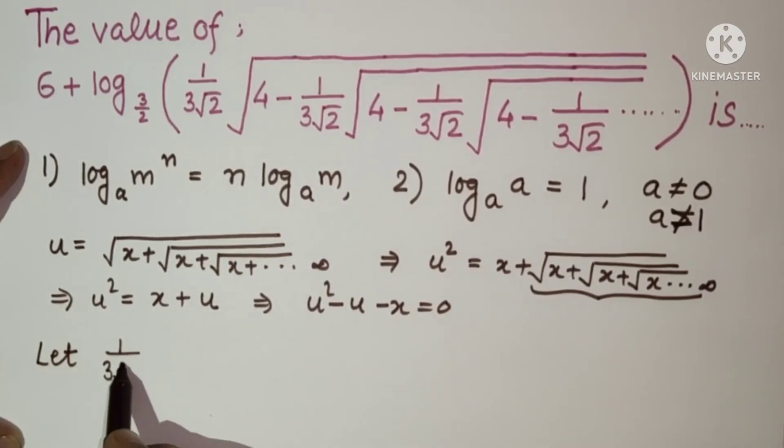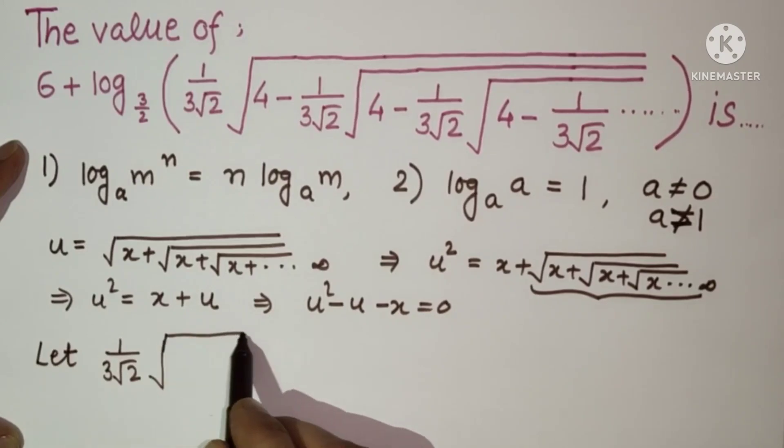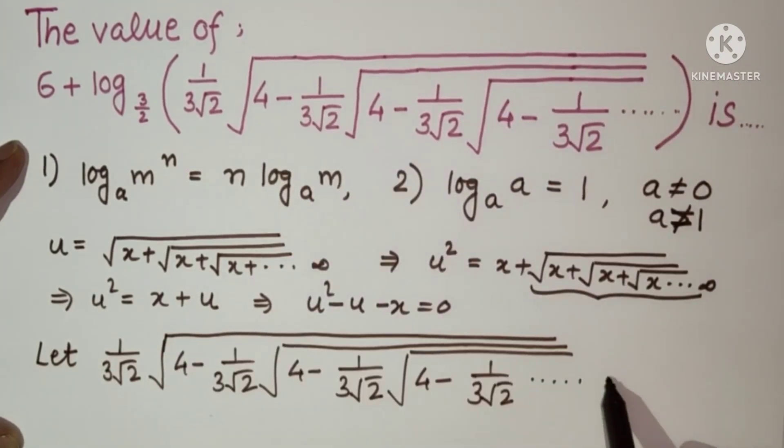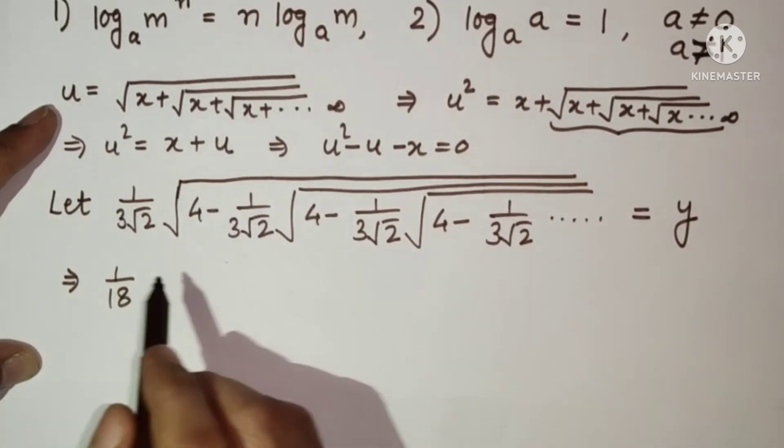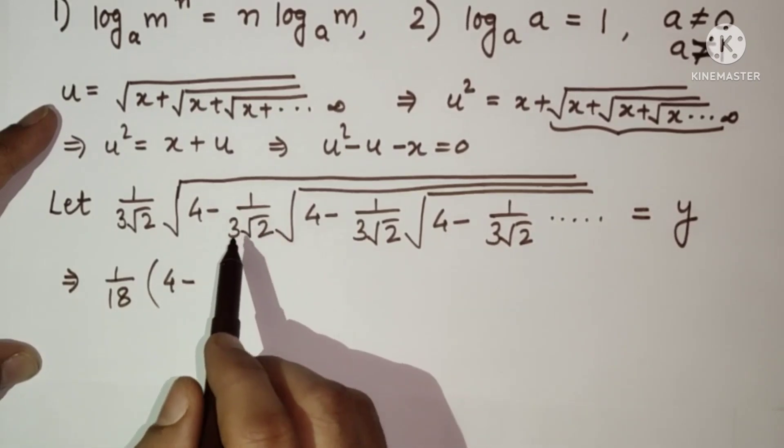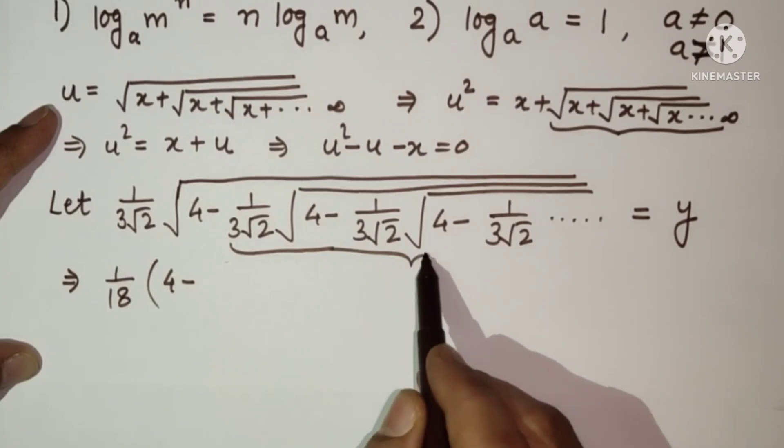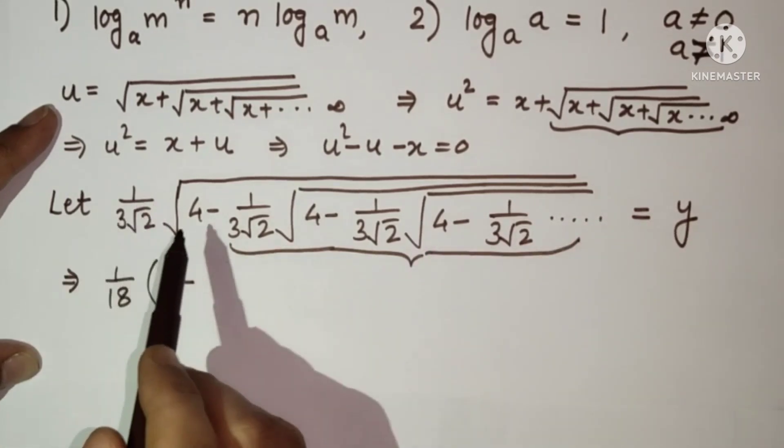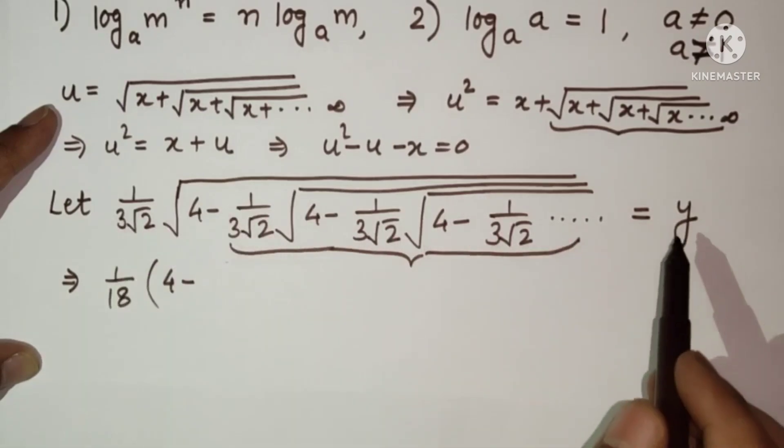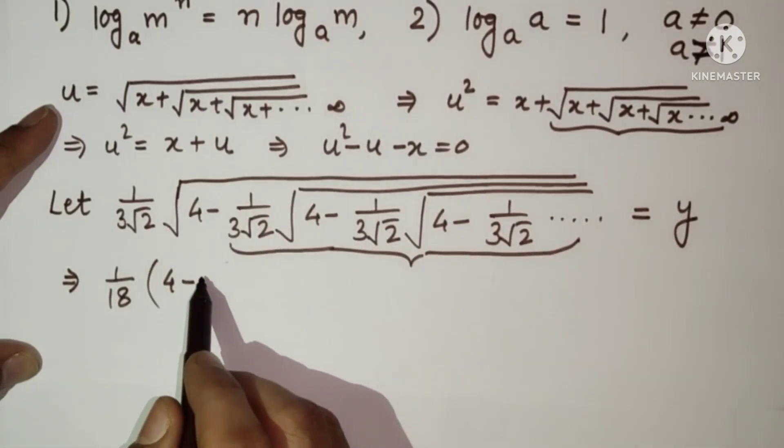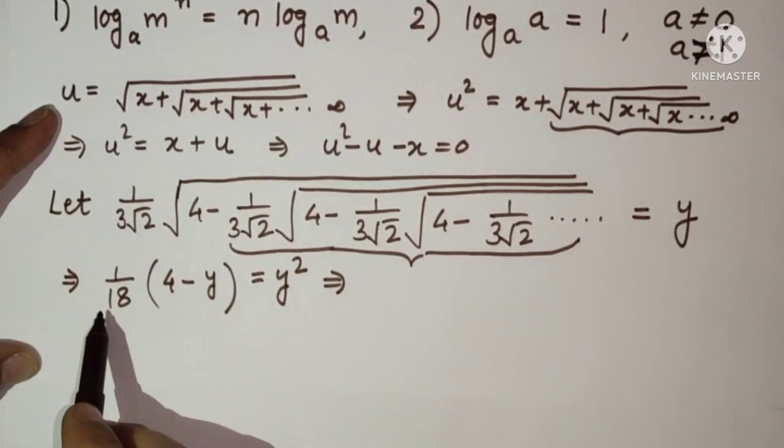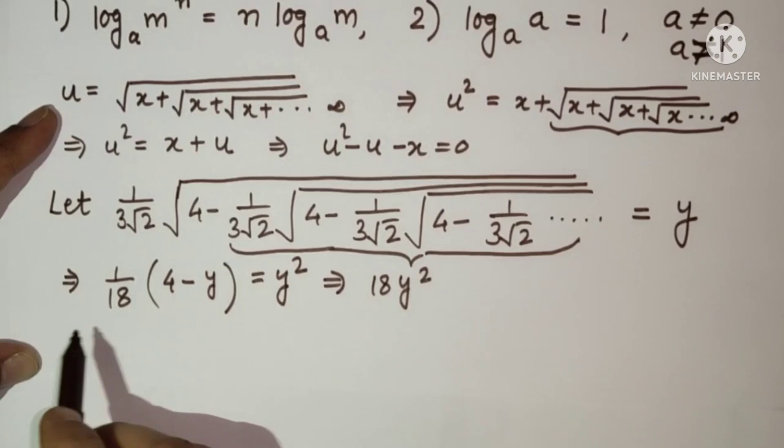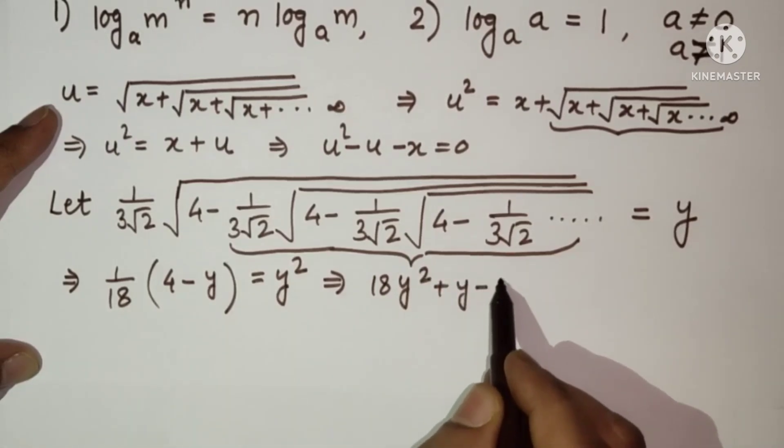1 upon 3 root 2 under root of this whole thing. So after squaring we are getting 1 upon 18 and this under root will be disappeared. So 4 minus this thing, this thing is what, this thing is nothing but y. 1 upon 18, 4 minus we have assumed the whole thing as y and this is again y, so 4 minus y. This is y square because we have squared throughout. 18 y square plus y minus 4 is equal to 0.